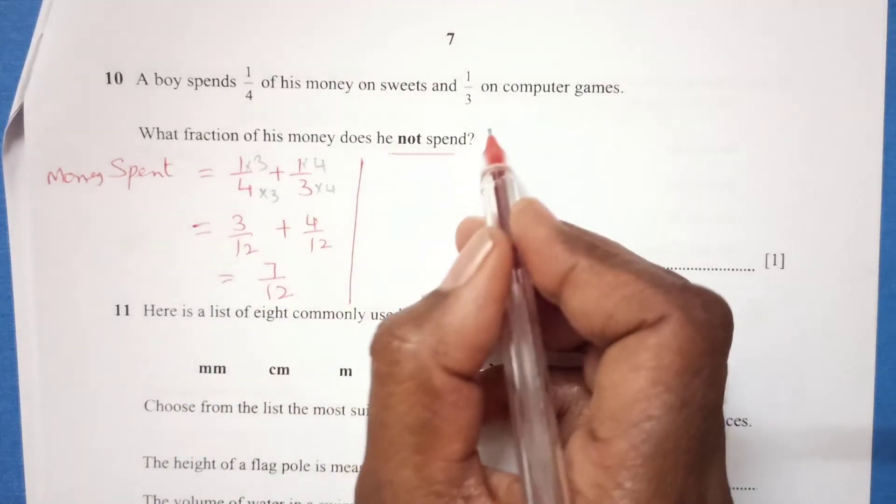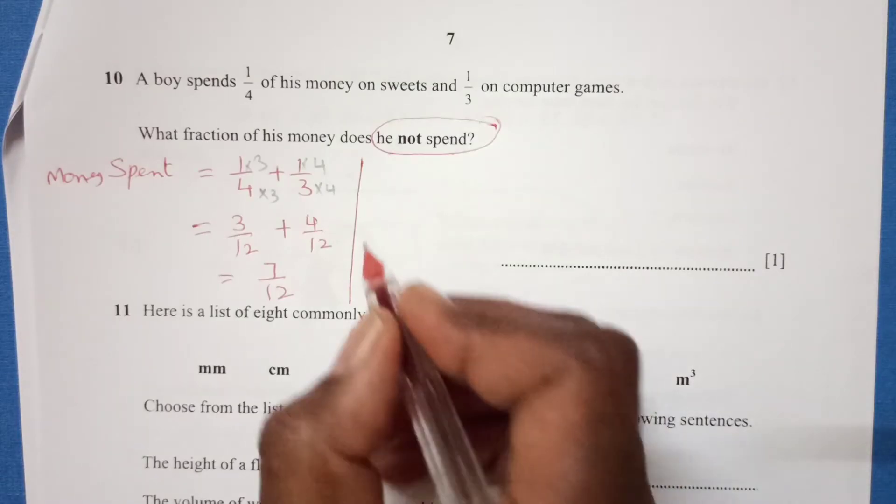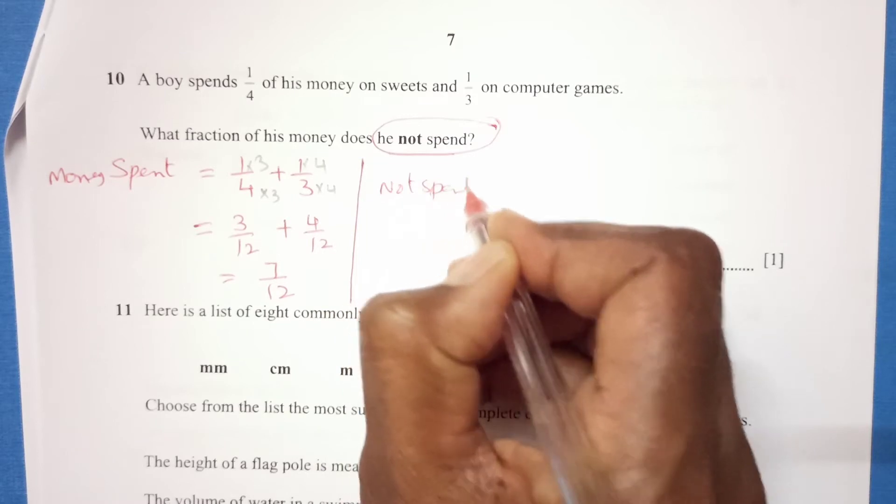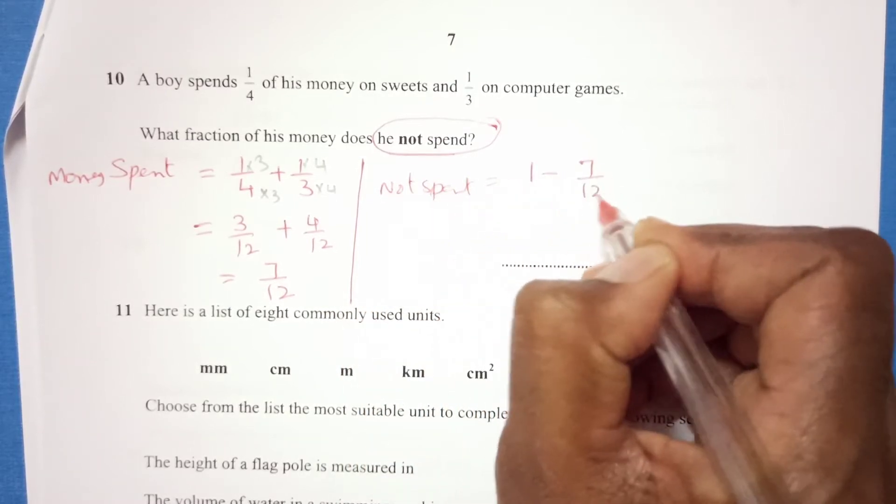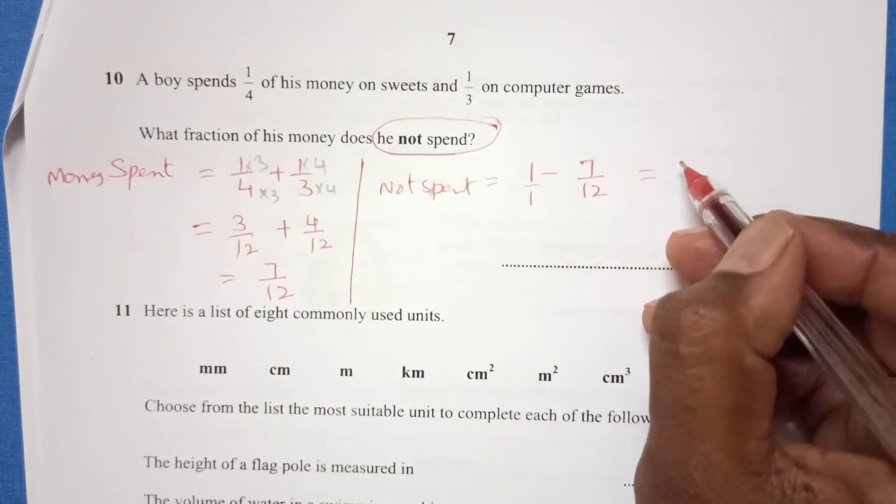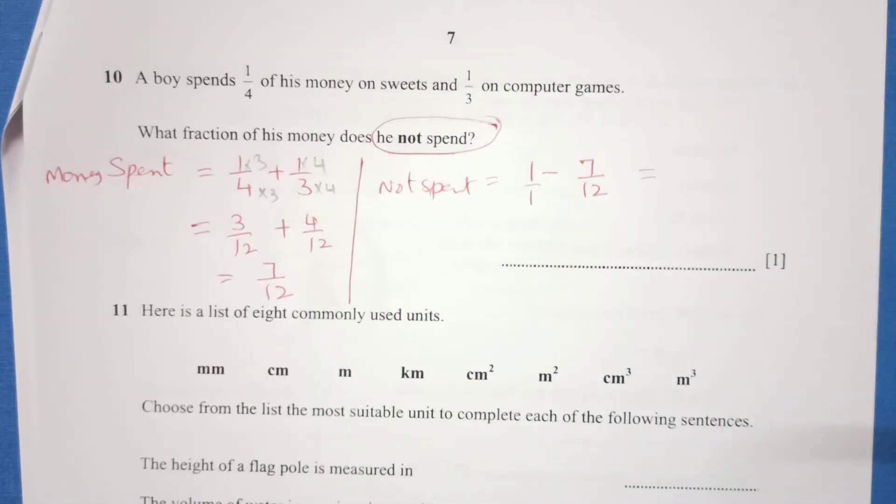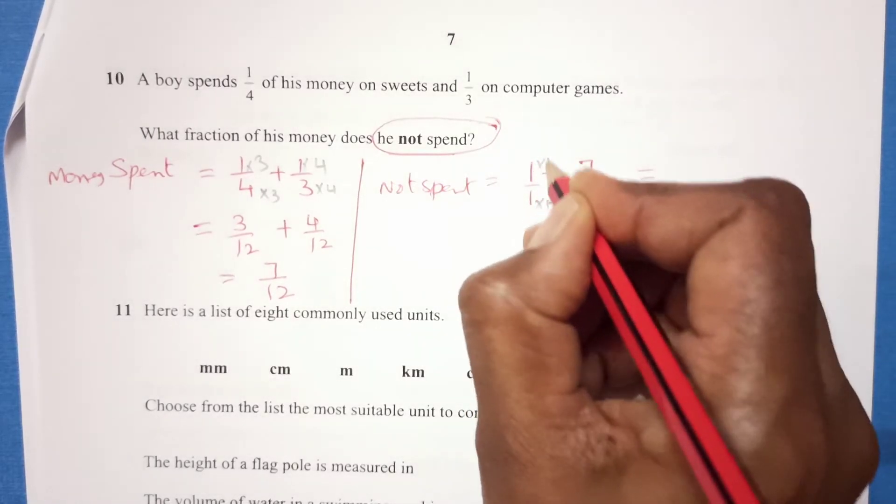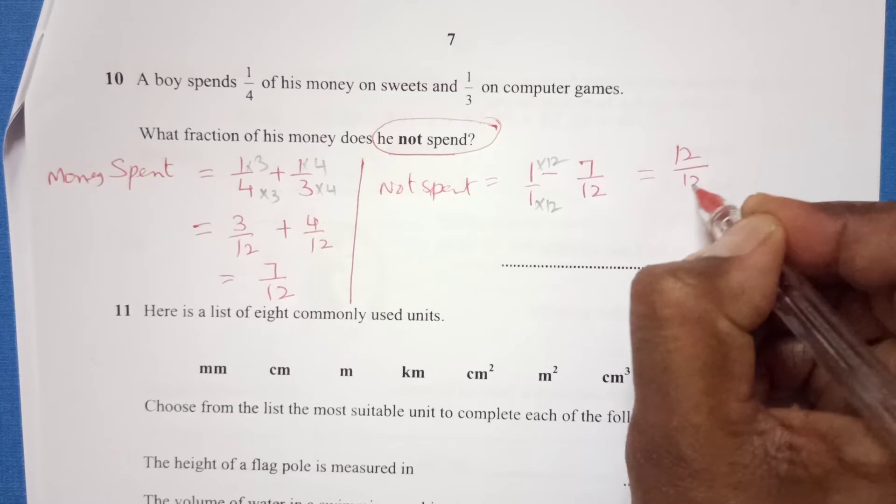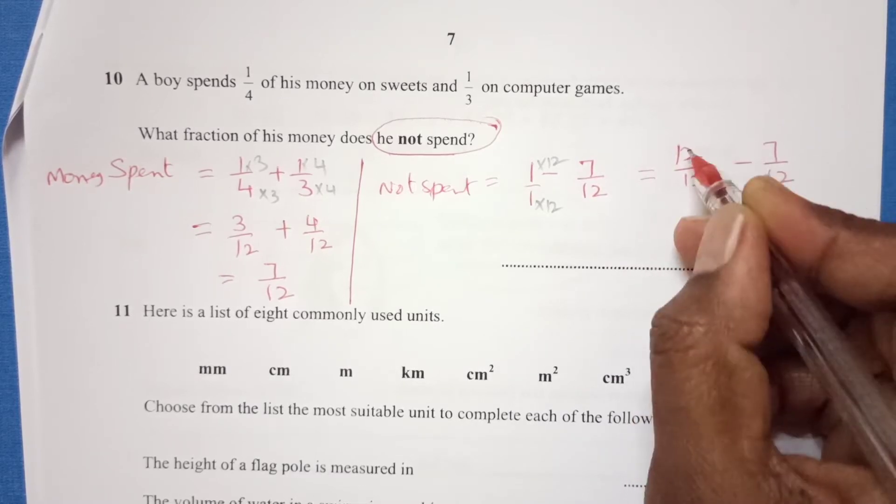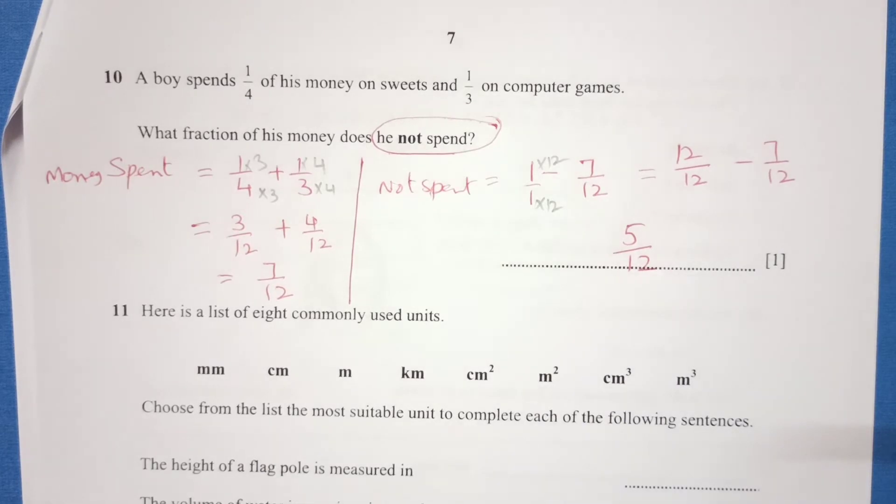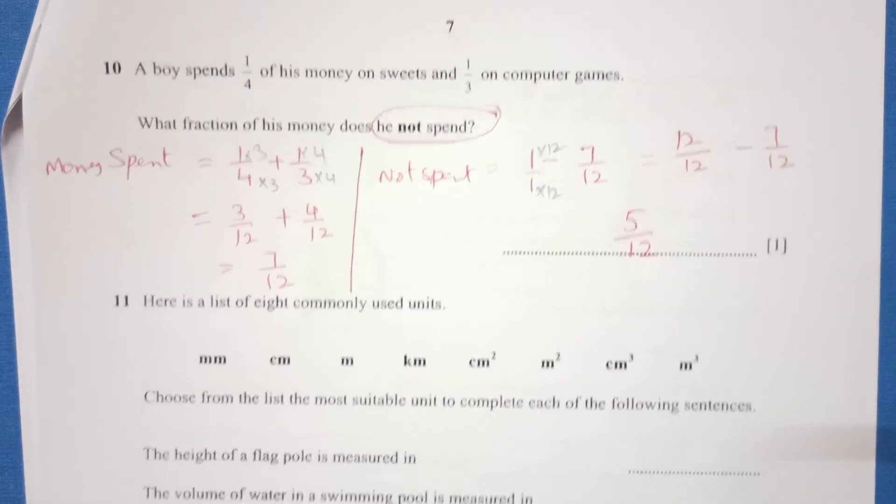Total now, denominator is same so we can directly add the numerator: 7 over 12. This is not our answer; we are looking for the money that he does not spend. So not spent is 1 minus 7/12. That means 12/12 minus 7/12, so 12 minus 7 is 5. Final answer is 5 over 12.